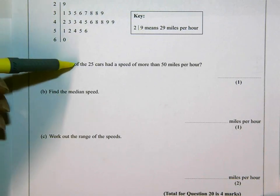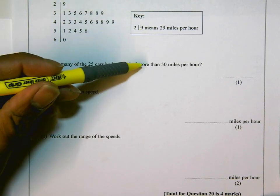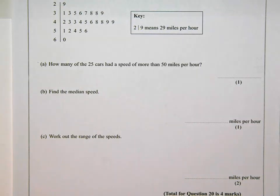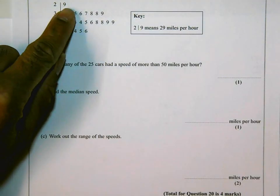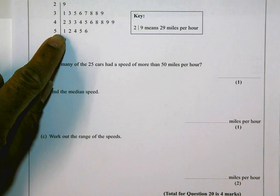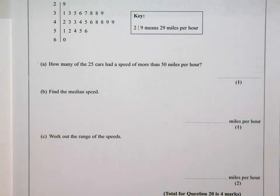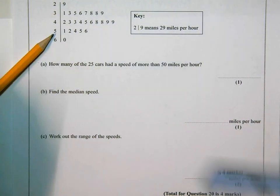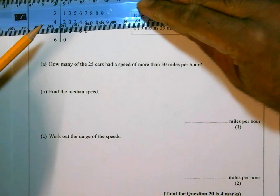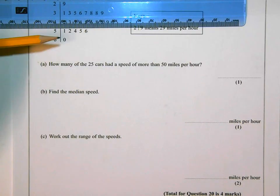How many of the 25 cars had a speed of more than 50 miles per hour? Okay, so that 2 and 9 stands for 29. So that 5 there stands for 50. So all the cars with speeds of more than 50 miles per hour are under there.